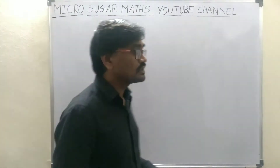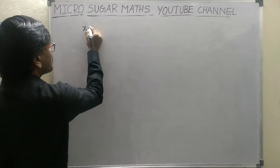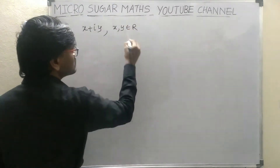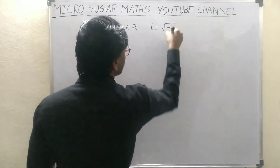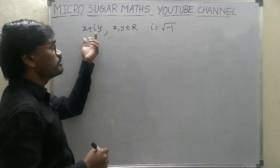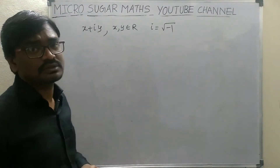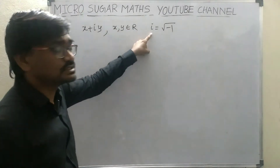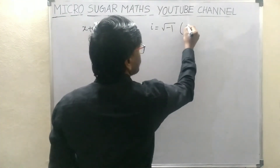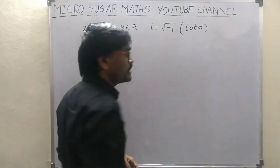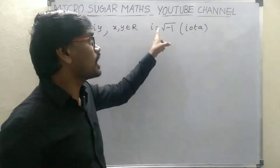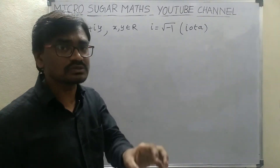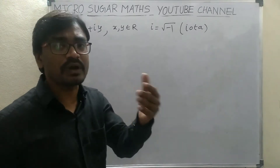Students, a number of the form X plus iY, where X and Y are real numbers and i is equal to the square root of minus 1, then the number is called a complex number. Here i is called IOTA. I have done 3 classes on IOTA — the videos are available on the playlist of the MicroSugarMash YouTube channel.